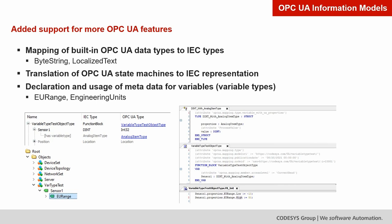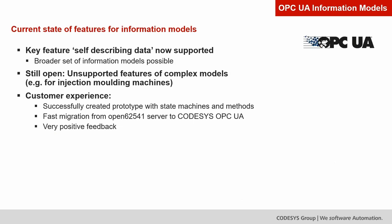In OPC UA, a variable describes a certain value — for example, a sensor with a data type of Int32. You can now decorate this variable with additional metadata like engineering unit range and engineering units themselves. For example, a temperature sensor might have a valid range from minus 10 to 50 degrees Celsius. This self-describing data is a key feature enabling a broader set of information models. Very complex models like those for injection molding machines still require features not yet supported in CodeSys, but the customer experience is very positive overall.